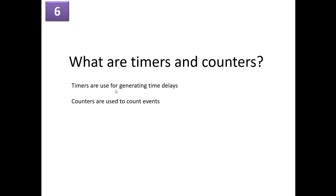What are timers and counters? Timers are used for generating time delays. For example, if you are printing text on an LCD or lighting up LEDs, you need some delay in between turning on and off — that delay can be generated with the help of timers. Counters are used to count external events. For example, if you want to count the RPM of an engine, you can use counters to count those external events.